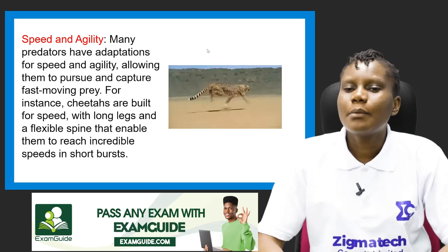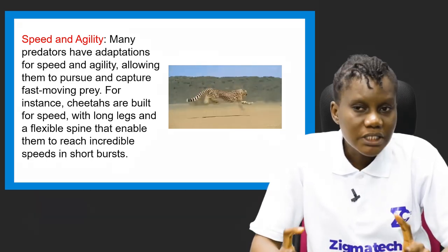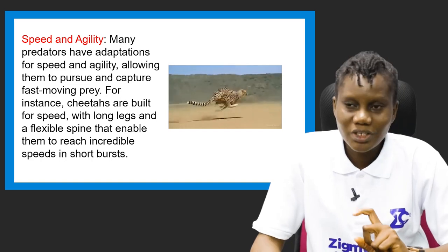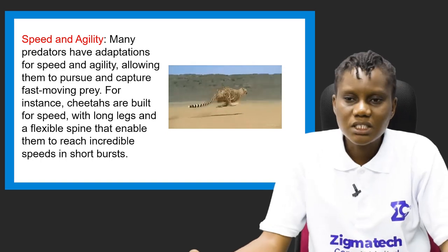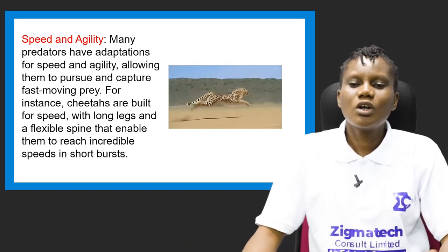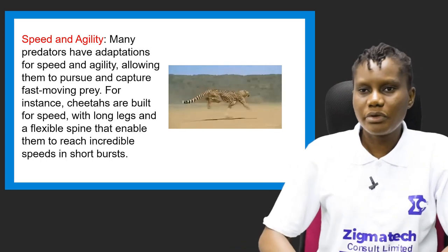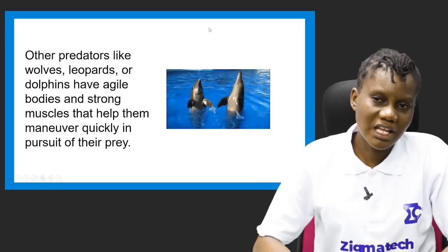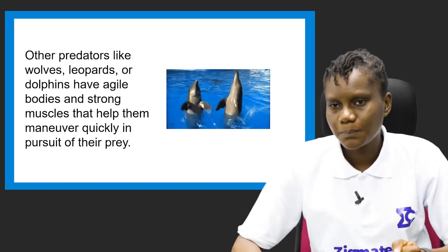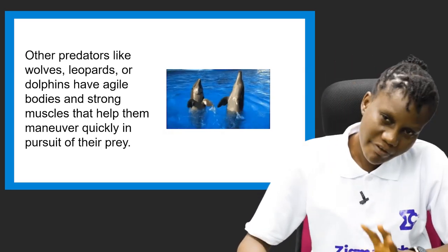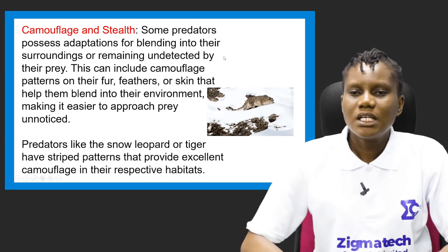The third predator adaptation is speed and agility. Many predators have adaptations for speed and agility, allowing them to pursue and capture fast-moving prey. For instance, cheetahs are built for speed with long legs and a flexible spine that enable them to reach incredible speeds in short bursts, allowing them to close in on prey quickly.